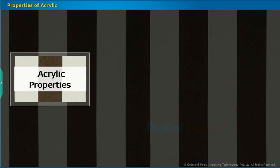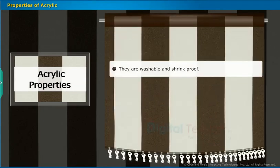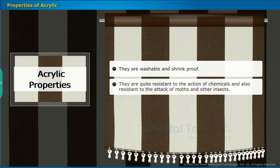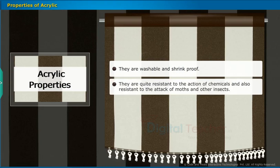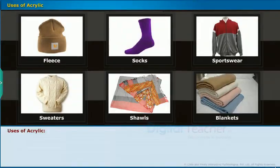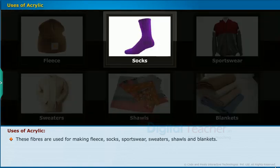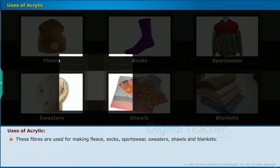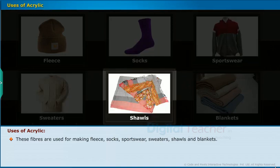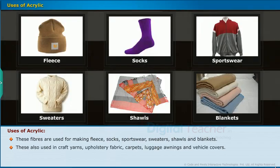Properties and Uses of Acrylic: They are washable and shrink-proof. They are quite resistant to the action of chemicals and also resistant to attack by moths and other insects. These fibers are used for making fleece, socks, sportswear, sweaters, shawls and blankets. They are also used in craft yarns, upholstery fabric, carpets, luggage, awnings and vehicle covers.